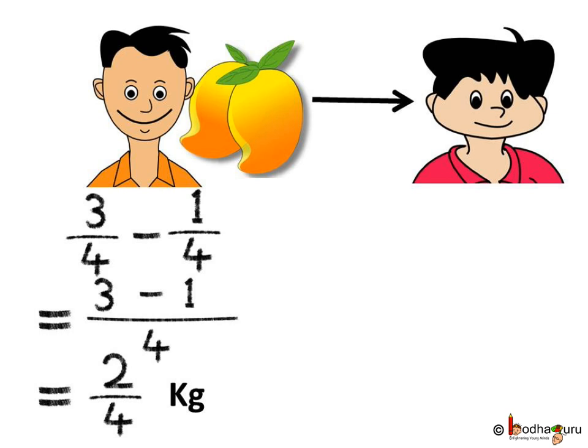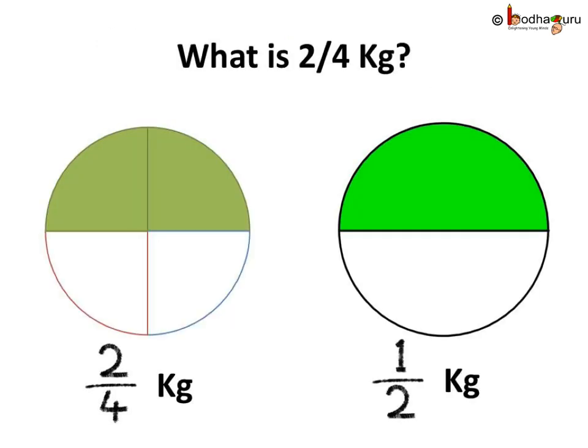Two by four kg of mangoes are left with Aman after he gives one-fourth kg to his friend. Now, you may ask, what is two by four kg? Pictorially, if we see two by four, which is two parts out of four parts, it is the same as one by two, which is one part out of two parts of a whole.